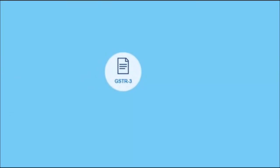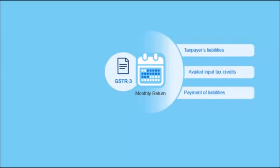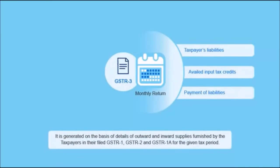GSTR 3 is a consolidated monthly return stating the taxpayer's liabilities, availed input tax credits and the payment of liabilities. It is generated on the basis of details of outward and inward supplies furnished by the taxpayers in their filed GSTR 1, GSTR 2 and GSTR 1A for the given tax period.